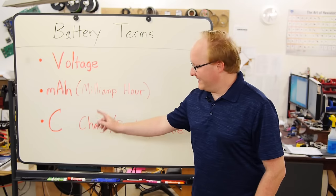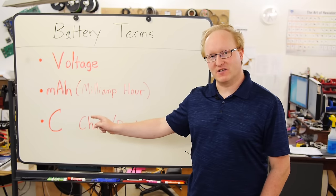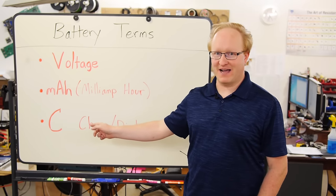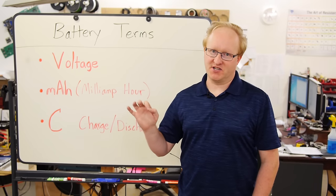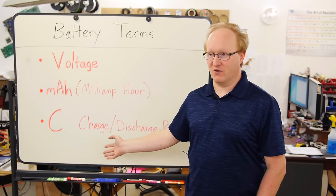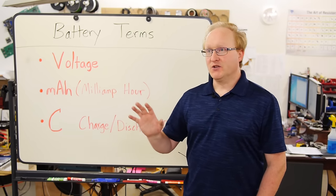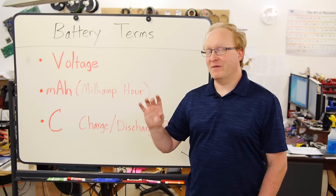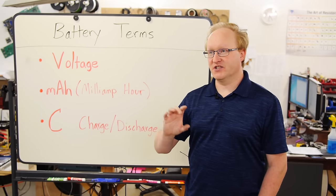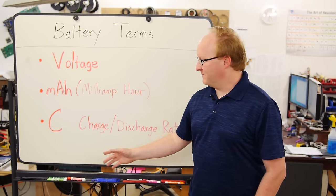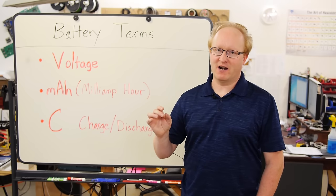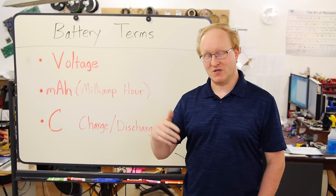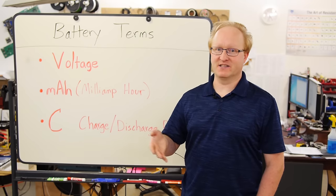You might also find a C rating on a battery, especially a newer, high-capacity lithium-ion polymer battery. That is a rate of charge or discharge, and typically, for the battery, it's going to be about discharge. The C rating tells you how many amps of power you can continuously discharge from the battery, although it's not a direct correlation. So if it's a 2,000 milliamp hour battery,